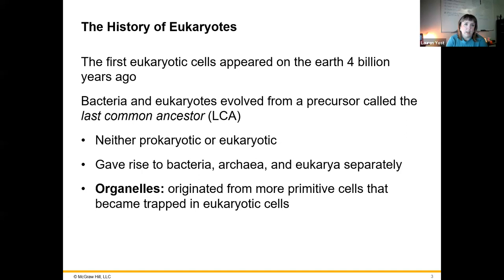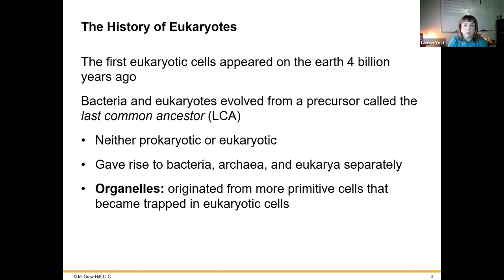Looking at the history of eukaryotes — basically the evolutionary history — it looks like bacteria and eukaryotes did share a common ancestor that we refer to as the last common ancestor. It was not a prokaryote necessarily or a eukaryote; it was just something that came before, billions of years ago, over 4 billion years ago. They believe that organelles within eukaryotes — those membrane-bound functional units inside of eukaryotic cells — originated from primitive cells that became trapped inside of the eukaryotic cells and then eventually served a purpose and were kept.